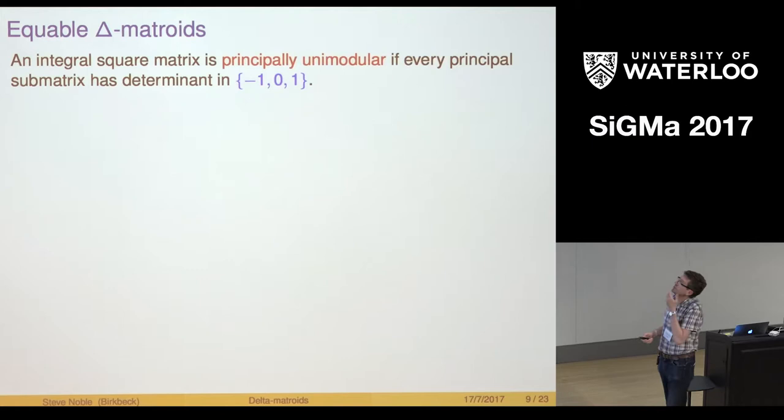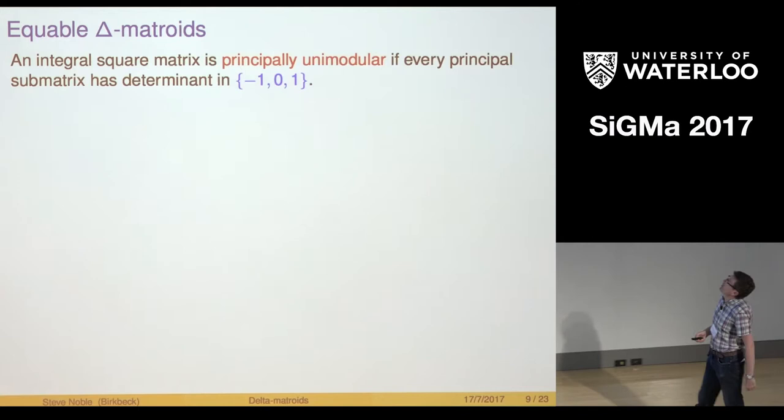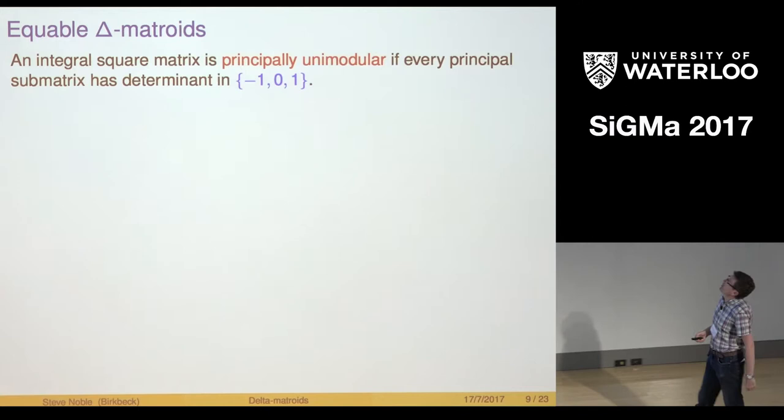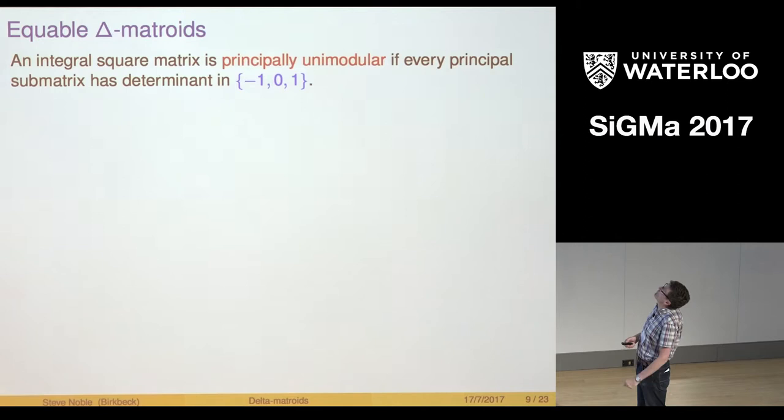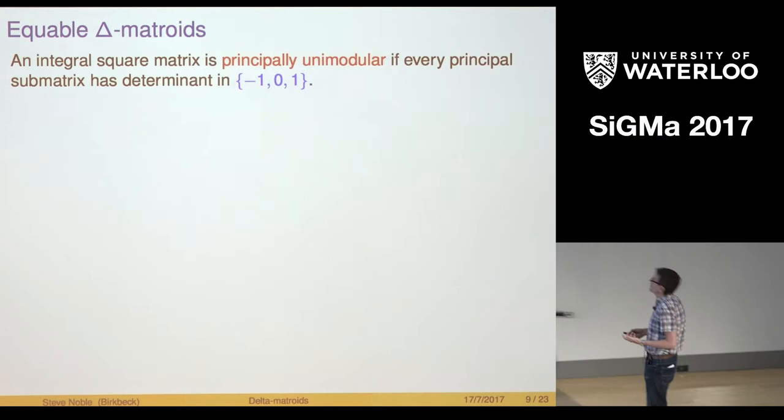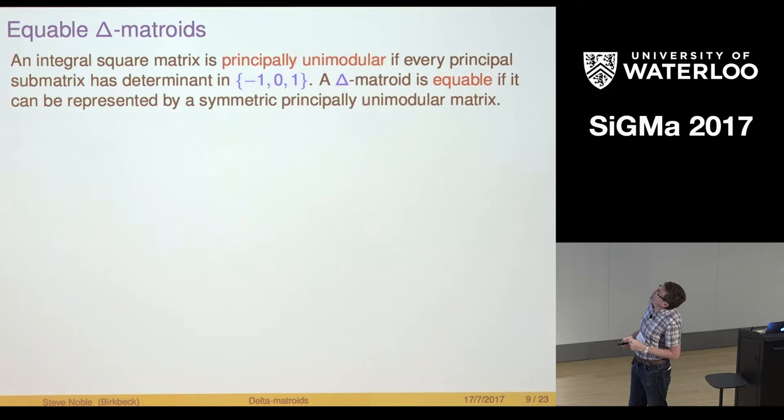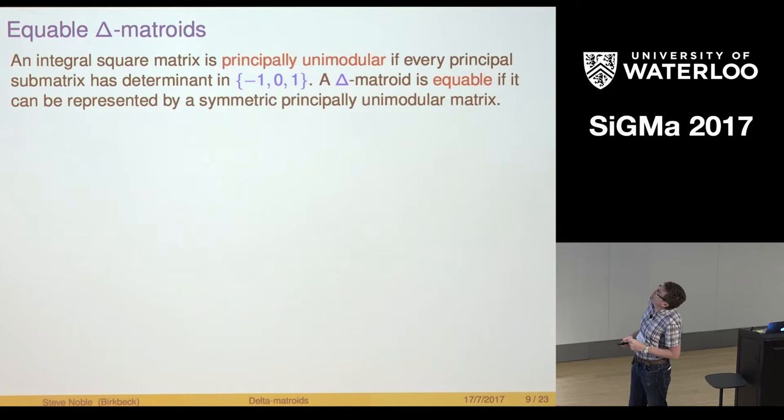We've got binary Delta Matroids. Maybe the next class we might try to think about is regular Matroids. Can we say something equivalent for Delta Matroids? This all comes from a paper of Jim Geelen. We'll say that an integral square matrix is principally unimodular if every principal submatrix has determinant minus 1, 0 or 1. That's generalizing or taking the equivalent of being totally unimodular. We'll say a Delta Matroid is equitable if it can be represented by a symmetric matrix as one of these principally unimodular ones.